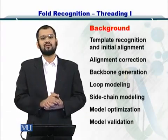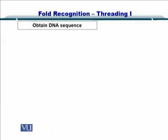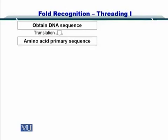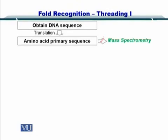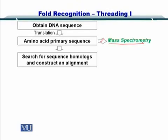If its sequence is known, there can be a case where you have the DNA sequence and you translate it to get the amino acid primary sequence — this can also be done using mass spectrometry. Then you search for homologs and construct an alignment, which is the necessary condition for homology modeling that we were just discussing.